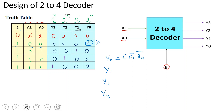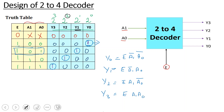Similarly for y1: looking at the y1 column, the corresponding input combination including enable is 1,0,1 — representing E, A1 bar, A0. For y2: the corresponding input combination is 1,1,0 — representing E, A1, A0 bar. For y3: the input combination is 1,1,1 — representing E, A1, A0.